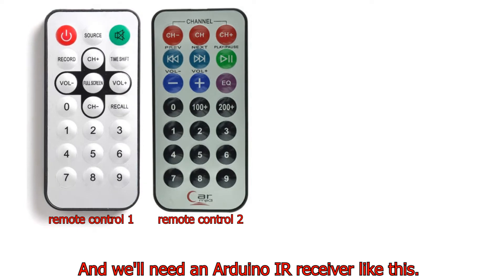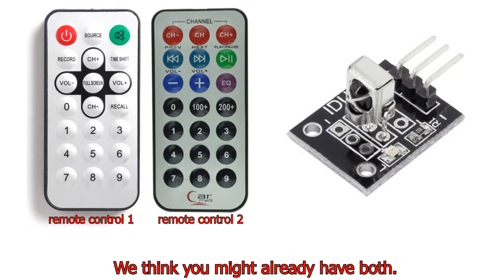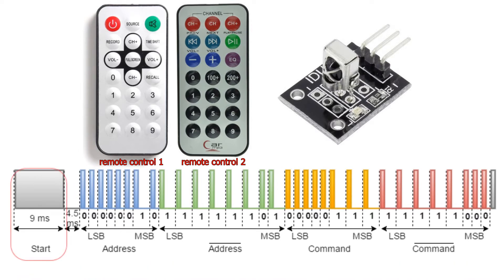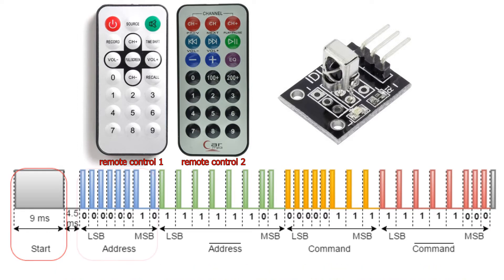And we'll also need an Arduino IR receiver like this one. We think you might already have both. The peculiarity of the NEC protocol is that it carries 32 bits of data. First is the start bit indicating the beginning of the transfer.